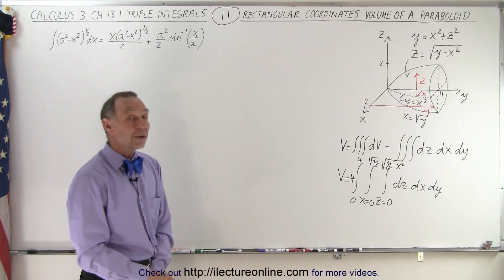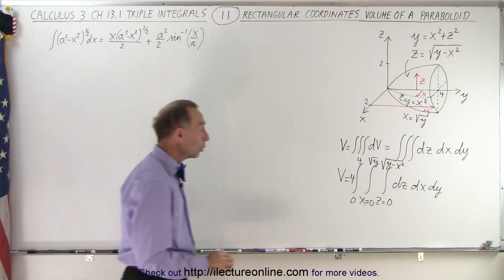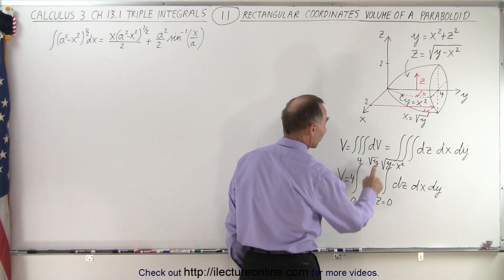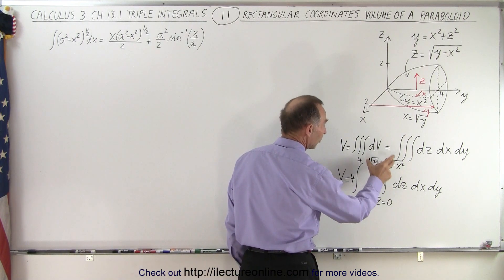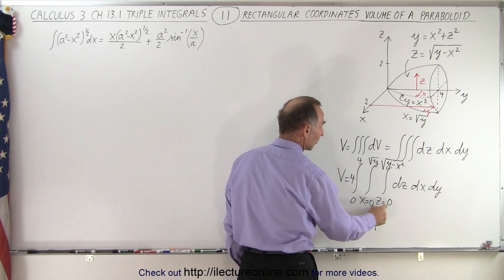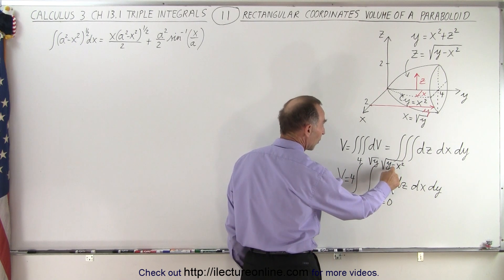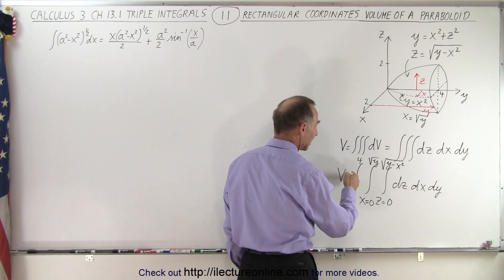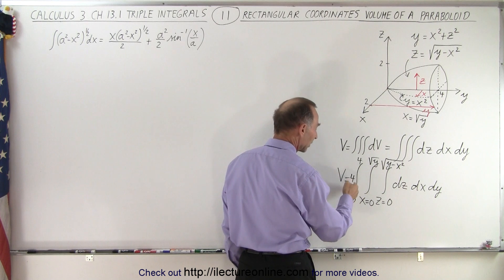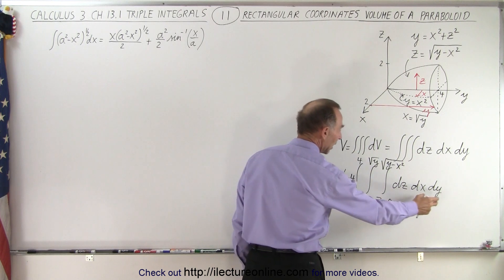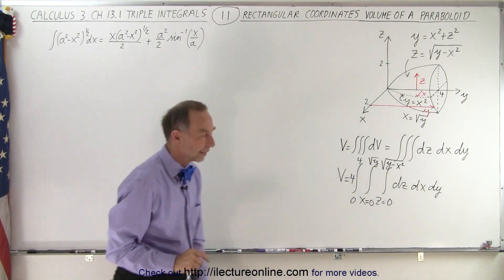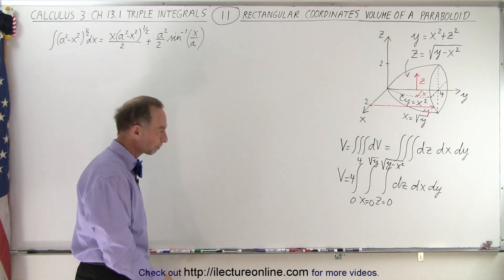Now you can see that both the limits for z and the limits for x are functions — the z limits are functions of y and x, and the x limits are functions of y — so when I integrate the third integral, I will only have the variable y remaining.